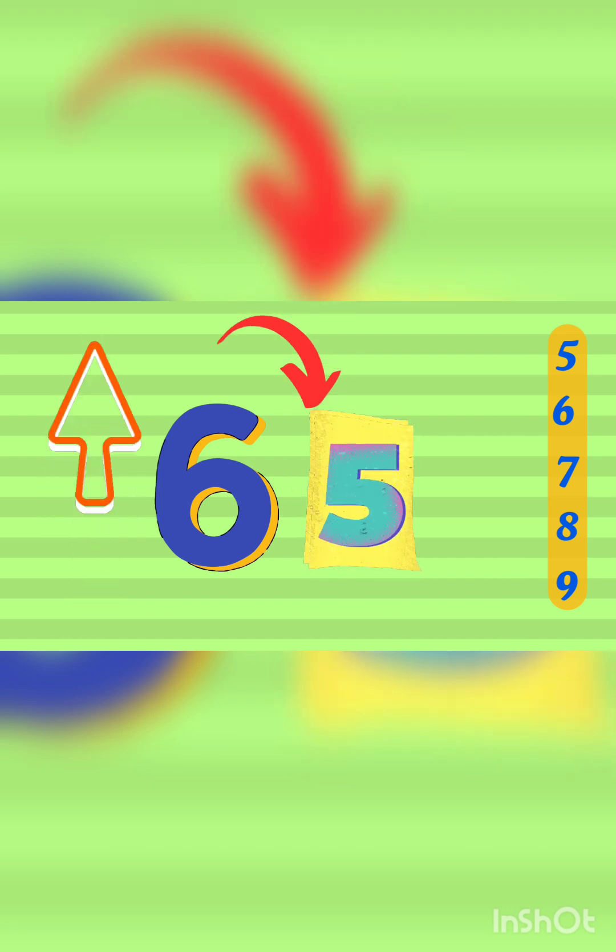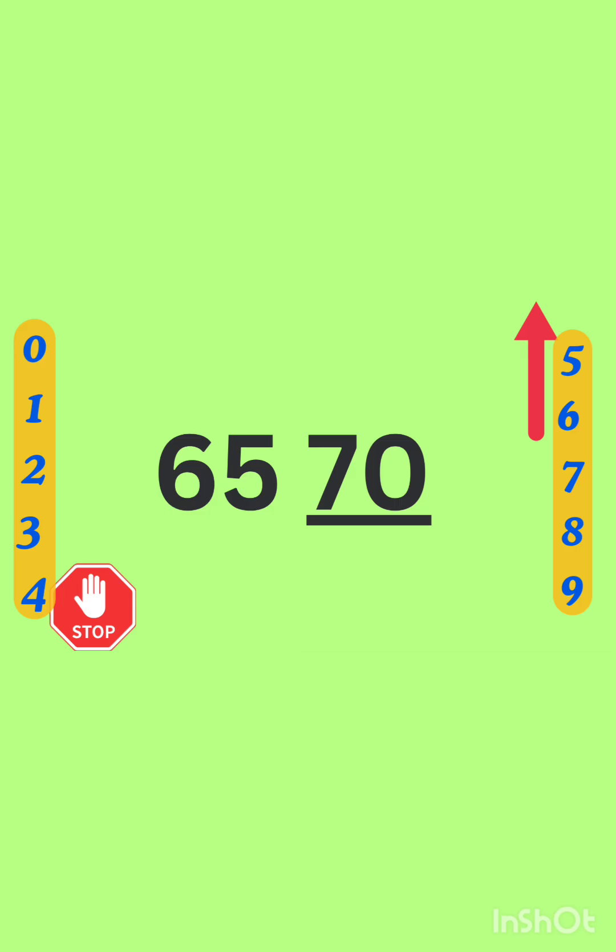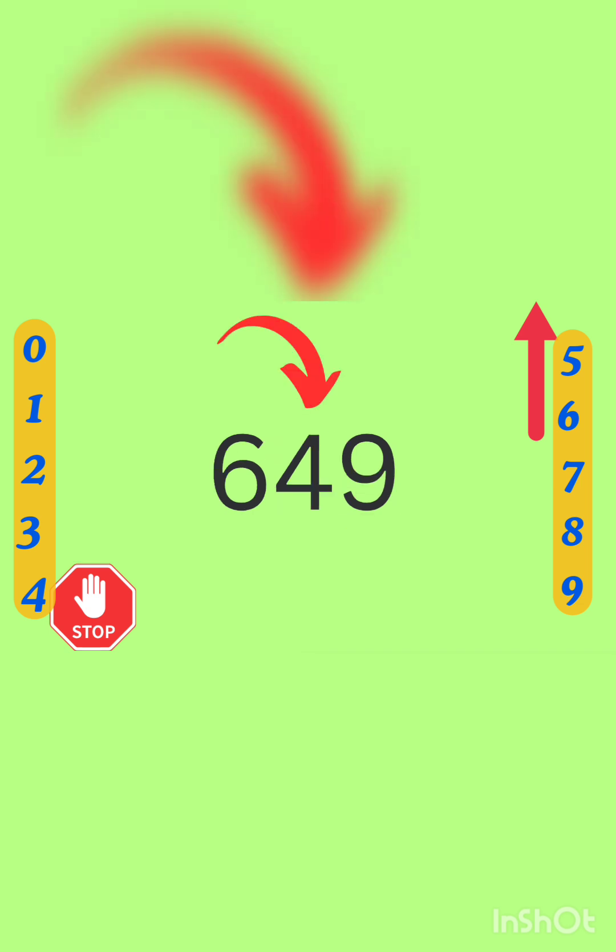Let's learn it with a few examples. 65 will round off to 70. 32. When there is a 2, we will stop. It means it will round off to 30.